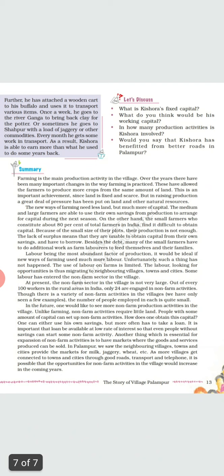To conclude this chapter: farming is the main production activity, and over time there have been many changes such as multiple cropping and modern farming methods. Small farmers borrow money from large and medium farmers who have savings from their farming. Palampur also has non-farming activities like transport, dairy, and shopkeeping, which are currently at a small scale but opportunities for non-farm activities in villages are likely to increase in coming years. Question answers will be in the next PDF file. Thank you, stay alert, stay safe, stay home.